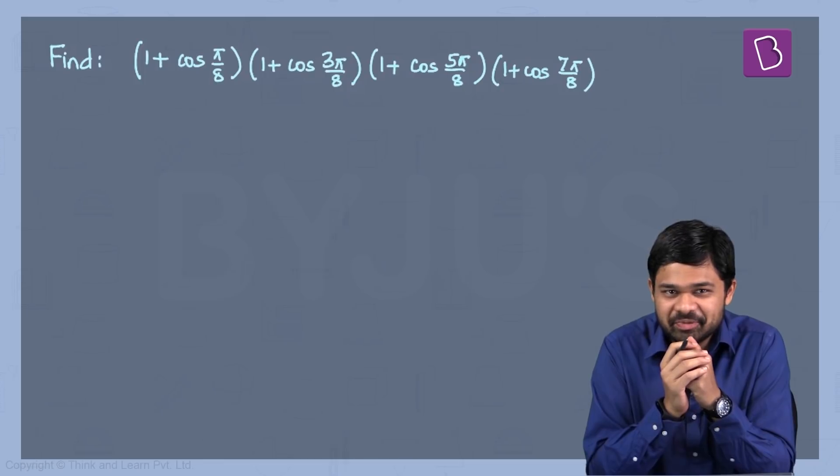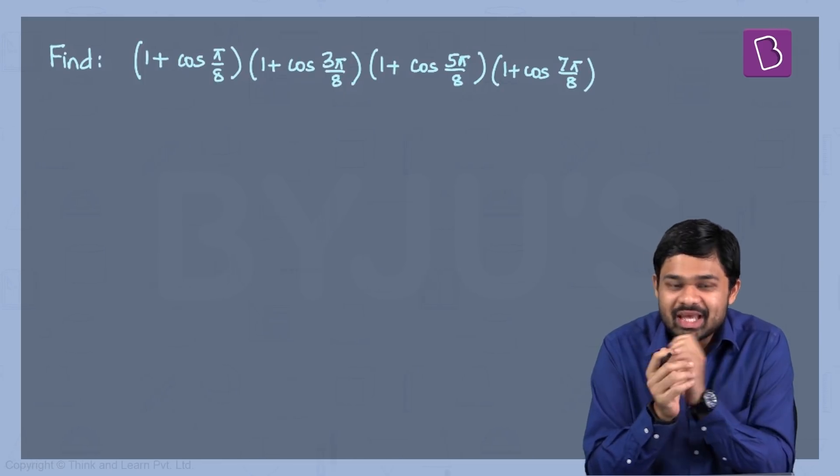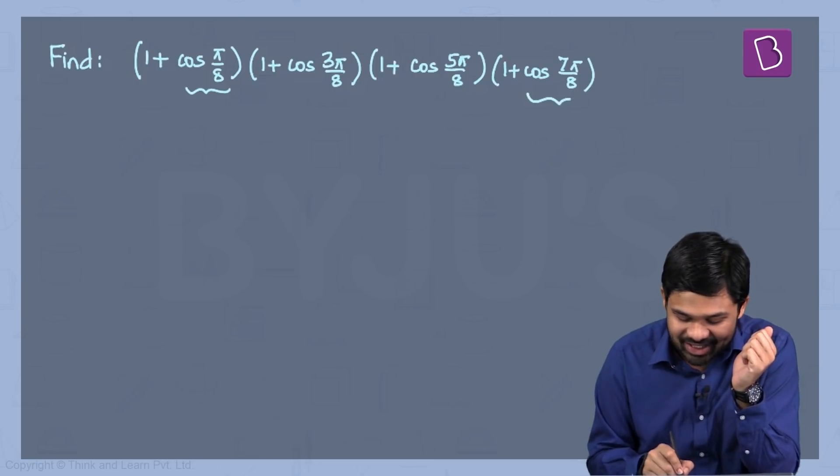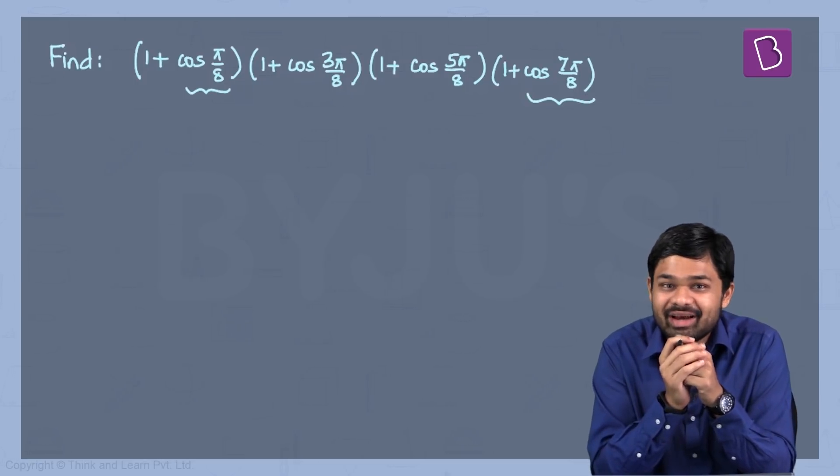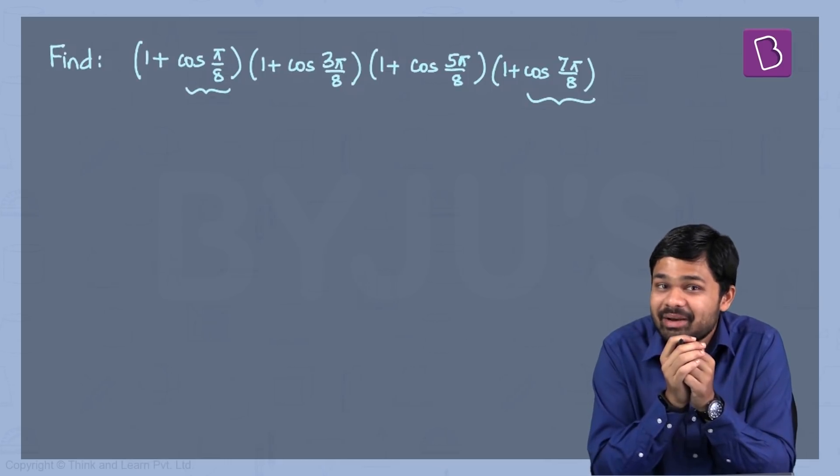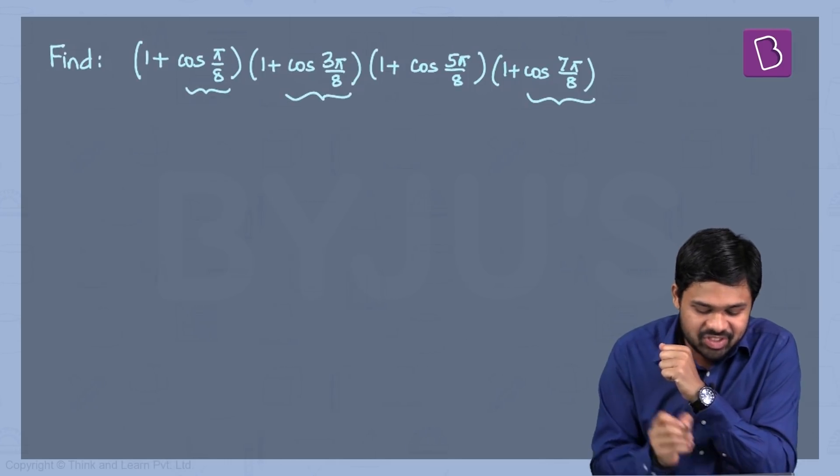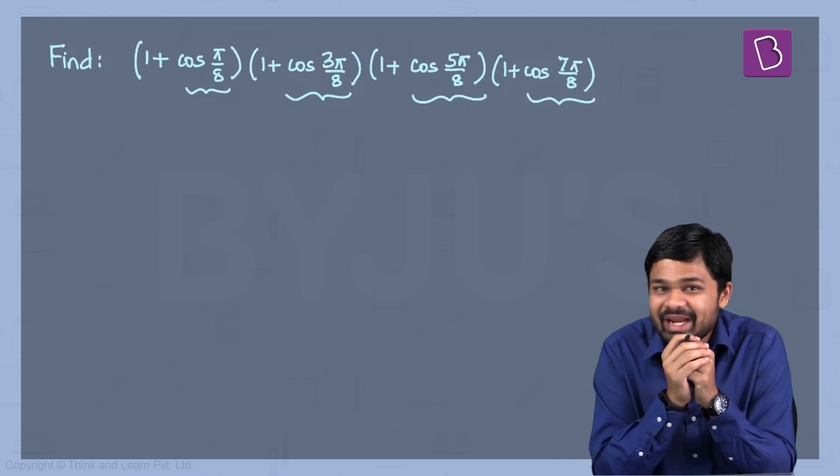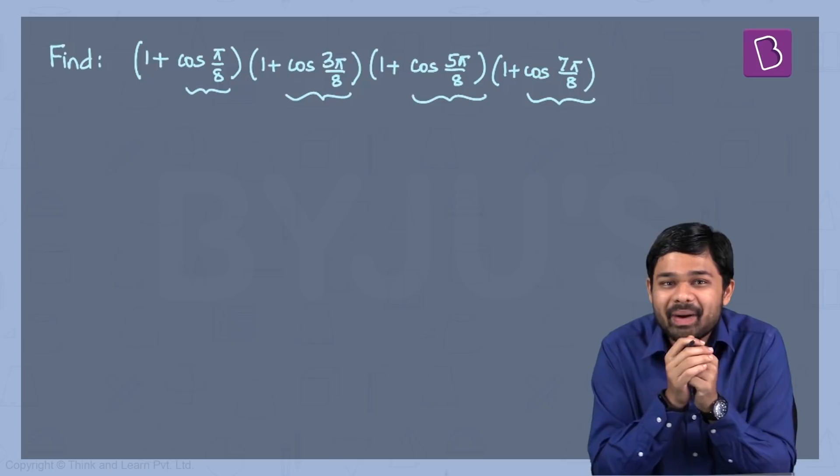If you closely observe this, the first term you have cos(π/8) and the last term you have cos(7π/8). Add these two arguments, what do you get? π/8 plus 7π/8 is nothing but π. The similar thing happens with the middle terms: there's 3π/8 and 5π/8, and you add them you again get π.